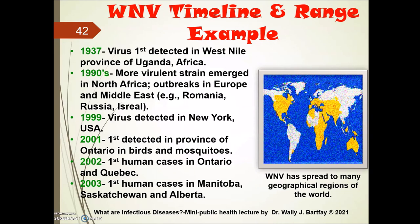West Nile virus first appeared in Africa and over time spread into Europe, and because of international trade, travel, and global warming it spread into North America including cold countries like Canada. West Nile virus was first detected in Uganda, Africa in 1937. By the 1990s, more virulent strains emerged in North Africa, leading to outbreaks in Europe and the Middle East including Romania, Russia, and Israel. In 1999, it was first detected in North America in New York City. In 2001, it was detected in birds and mosquitoes in Ontario, Canada, with the first human case in 2002, and by 2003 cases occurred in Manitoba, Saskatchewan, and Alberta.